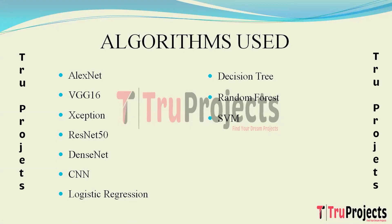Support Vector Machine (SVM) is a supervised machine learning algorithm used for classification and regression. It finds a hyperplane that best separates classes, is applied to classify RBC images, and is effective in high-dimensional spaces with complex decision boundaries. K-Nearest Neighbors (KNN) is a non-parametric, lazy learning algorithm that classifies data points based on the majority class among their K nearest neighbors, used for its simplicity and effectiveness in classification tasks.